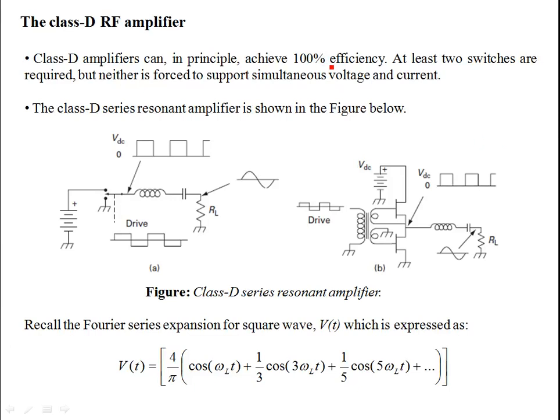We continue our discussion with Class D RF amplifiers. As we have discussed previously for Class C amplifiers, in principle their efficiency can reach up to 90 percent, but they are not meant for very high fidelity applications like audio applications.